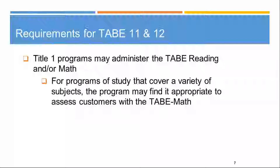Title I programs may administer the TABE reading and/or math. Some programs only do reading, some do both, and some just do math. Importantly, test forms must be alternated — if you pre-test a student with TABE 11, you post-test them with TABE 12. You also need to use the same level for both: if you gave a Level E TABE 11 for the pre-test, you use Level E TABE 12 for the post-test.